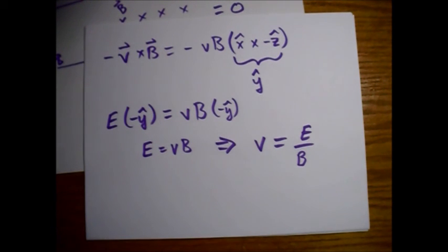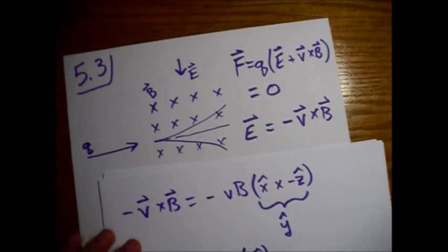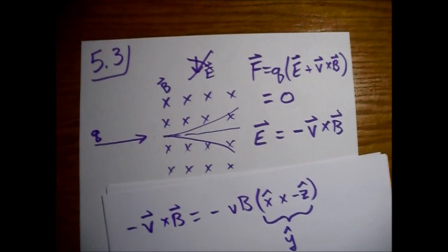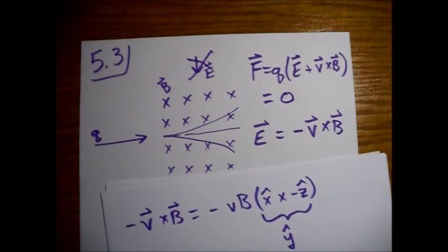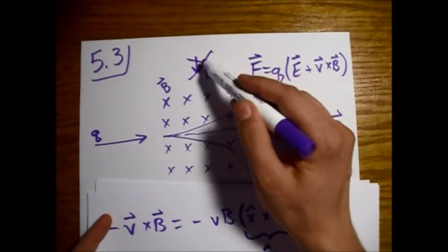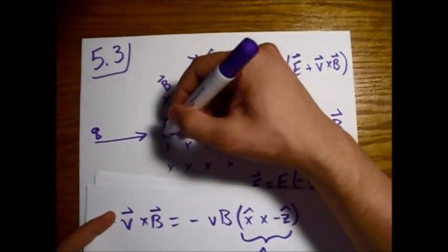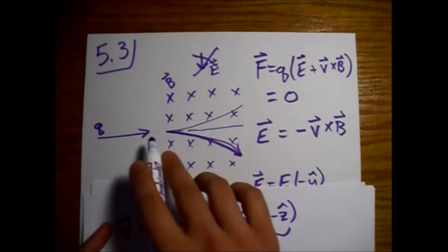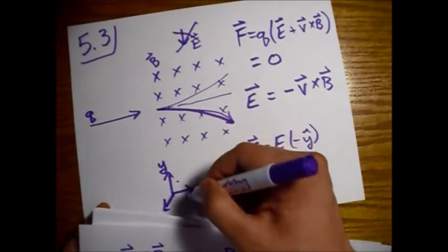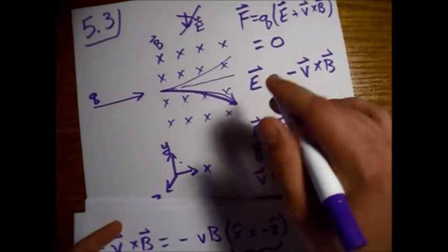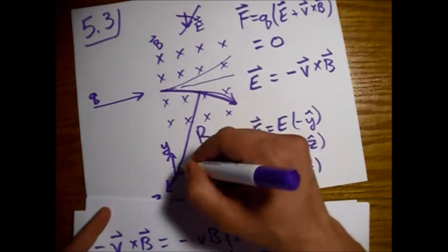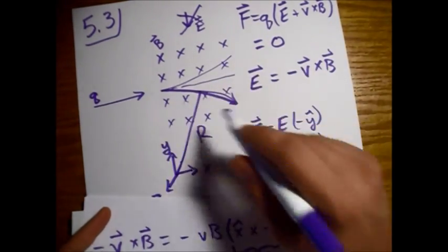For part B, he now turns off the electric field. He measures the radius of curvature of the beam as deflected by the magnetic field alone. With the electric field off, since we have electrons coming in, they will now follow a curved trajectory. He measures this radius of curvature R. In terms of E, B, and R, we want to find the charge-to-mass ratio of the particles.